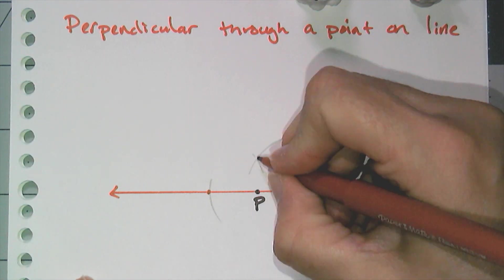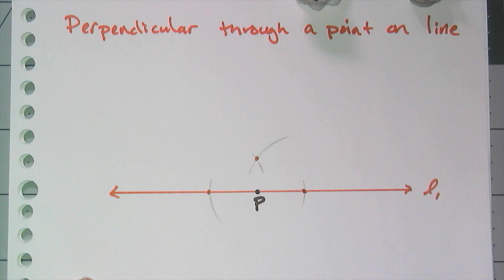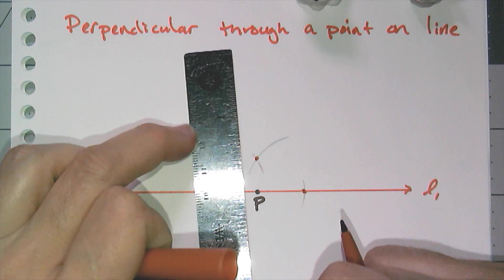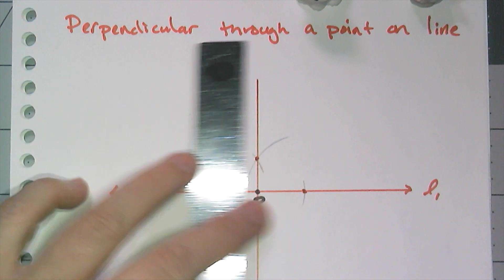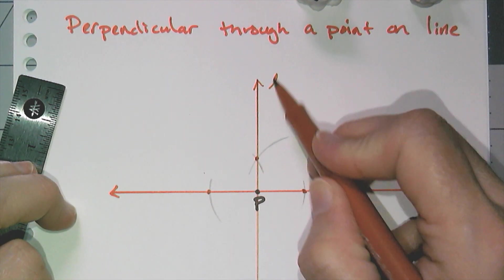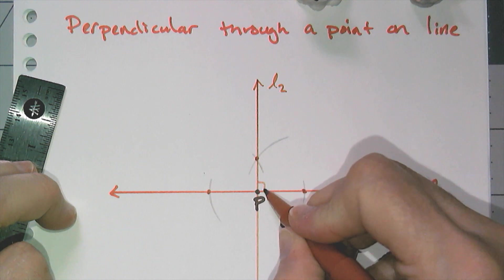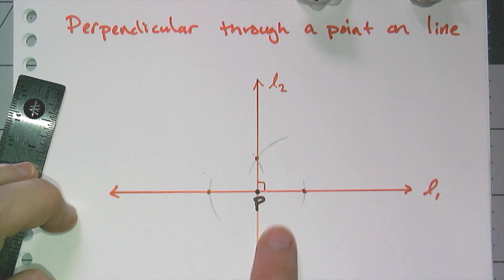the second point on the line that is perpendicular to that original line that goes through point P. And so here I have constructed line 2 that is perpendicular to line 1 at point P.